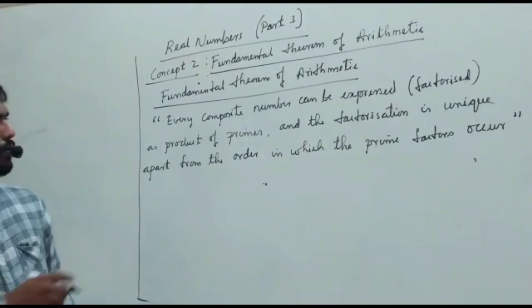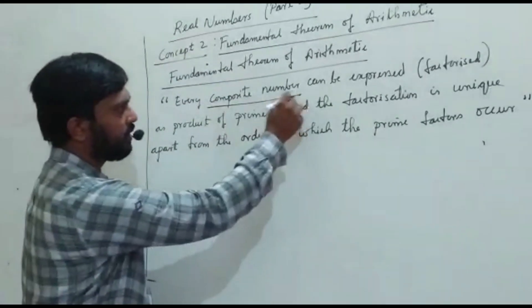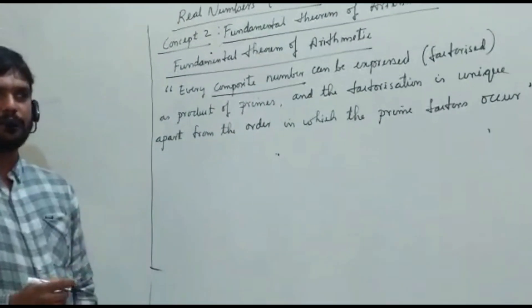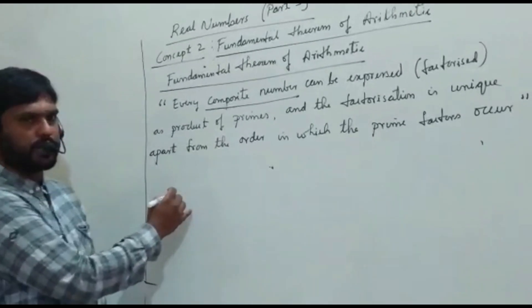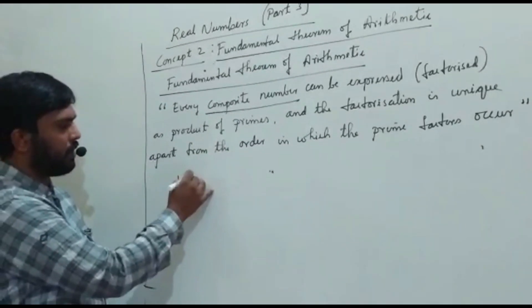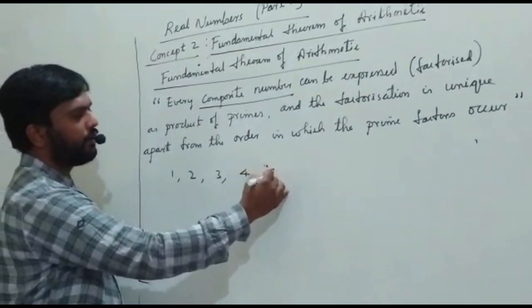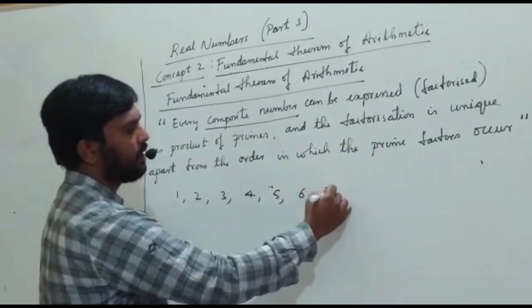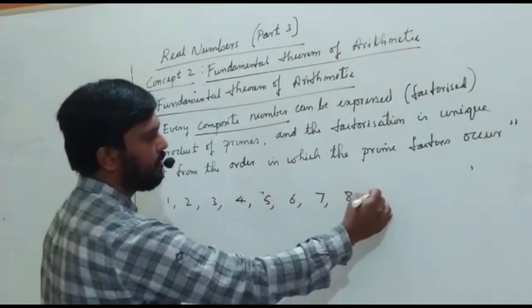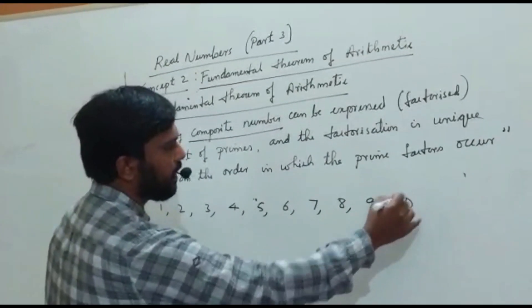You have to know what is composite number. You have learned in the previous classes. For example, we have the numbers 1, 2, 3, 4, 5, 6, 7, 8, 9, 10.